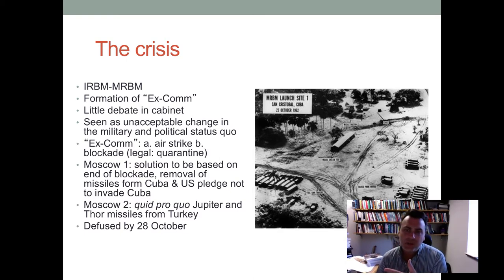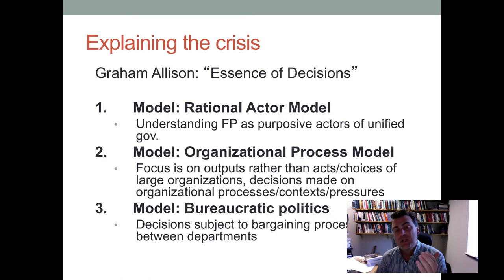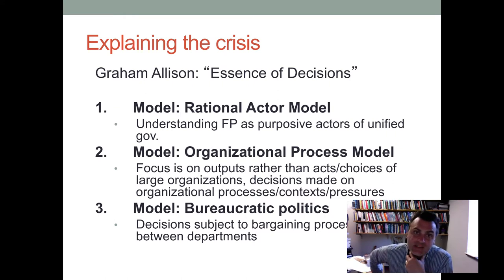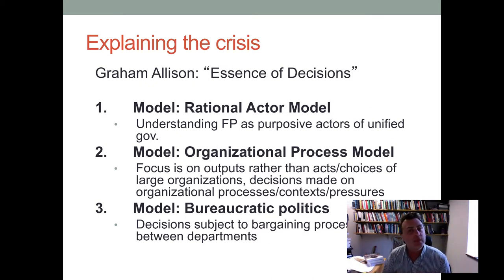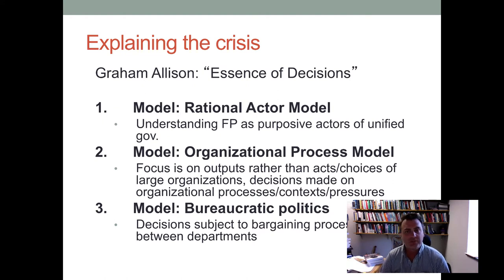Everybody applauded John F. Kennedy after it happened — that he had effectively prevented the Third World War. In the 1970s, a very influential book came out by Graham Allison, 'The Essence of Decision,' which drew on all the declassified documents on the Cuban Missile Crisis. He gives us three models: the rational actor model, which assumes governments are rational units that engage in a calculation process and pick the best possible course of action.